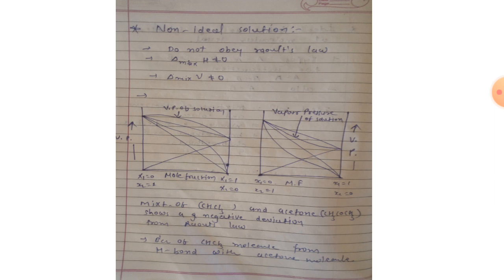In the case of negative deviation from Raoult's law, intermolecular attractive forces between A-A and B-B are weaker than those of A-B. This leads to a decrease in vapor pressure, resulting in negative deviation. The calculated vapor pressure value is lower, and therefore the result gives negative deviation.